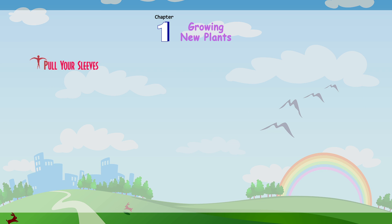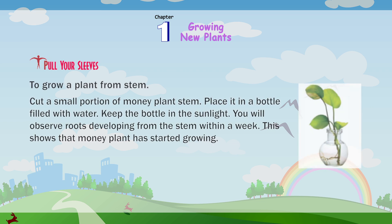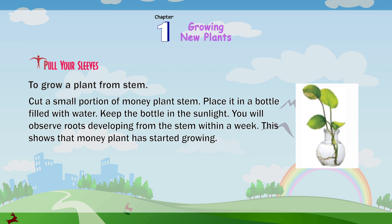Pull up your sleeves — to grow a plant from a stem. Cut a small portion of a money plant stem. Place it in a bottle filled with water. Keep the bottle in the sunlight. You will observe roots developing from the stem within a week. This shows that the money plant has started growing.